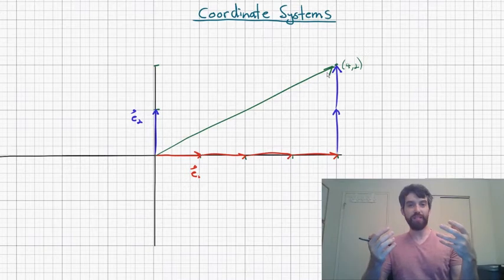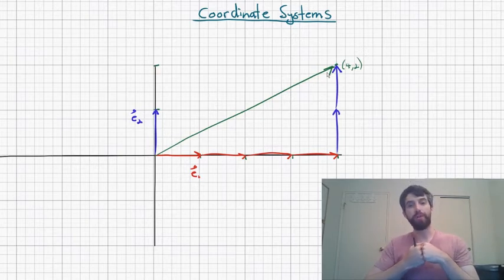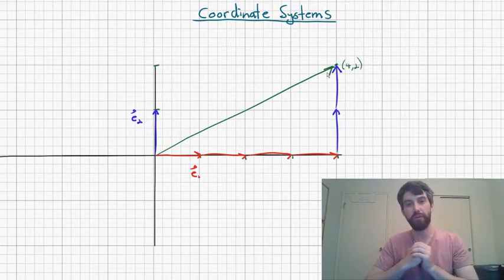So in other words, a coordinate 4, 2 can be thought of as an instruction. It tells you go out to the right 4 times along the E1, and it tells you to go up 2 times along the E2. However,